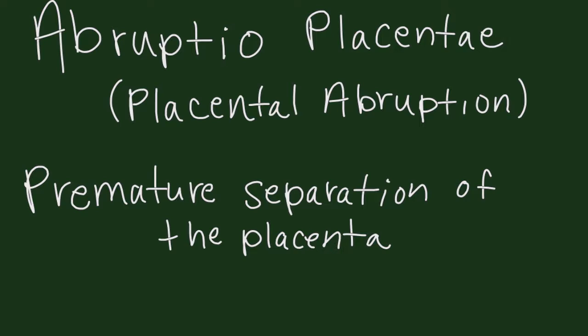Abruptio placentae, or placental abruption, is the premature separation of the placenta from the uterine wall, either partially or completely. The incidence is approximately 1% of all pregnancies.